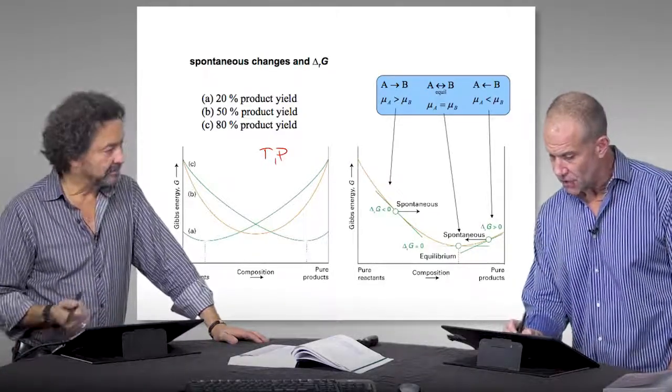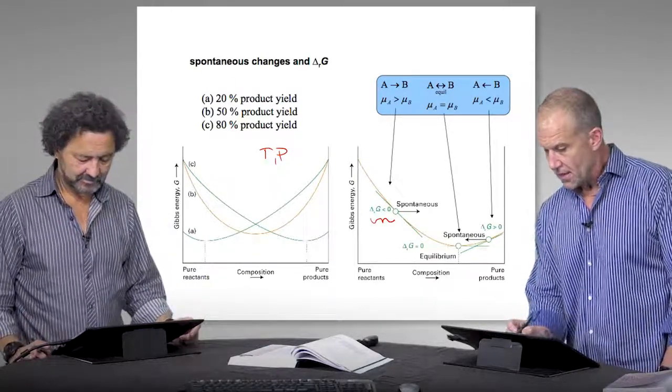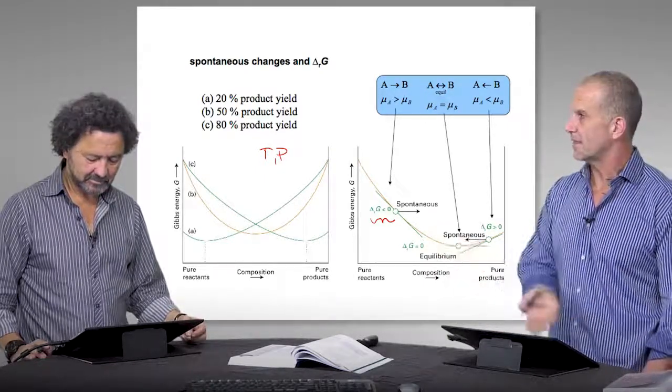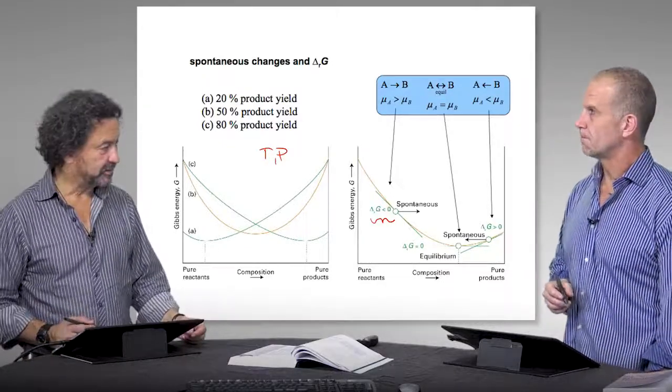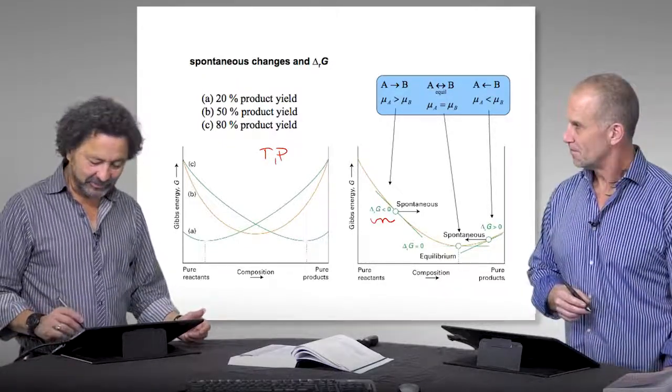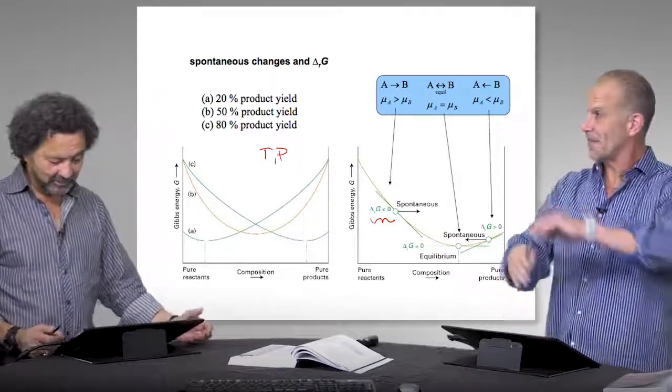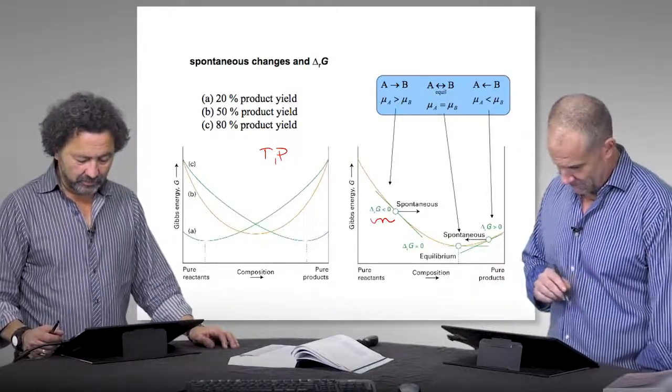And as you've shown here, this is where it spontaneously goes, it hits there. And now if it keeps trying to go in that direction, it's not spontaneous in that direction anymore. But if you come back, it becomes spontaneous again, because you see that way the derivative, that's why it's critical. It's a minimum, that it has to be that minimum.